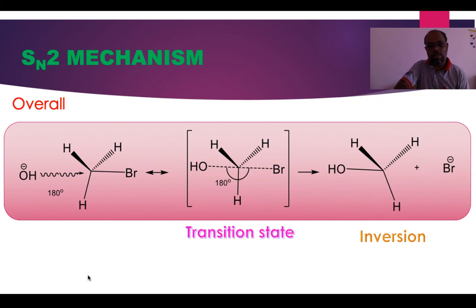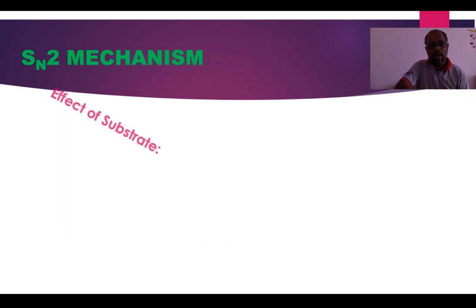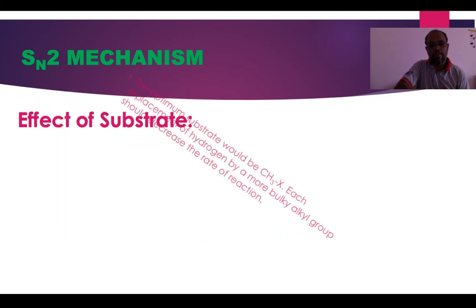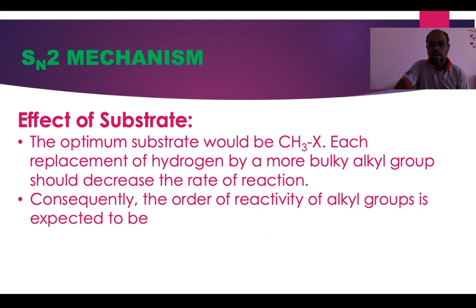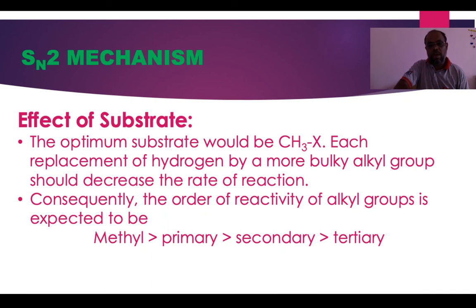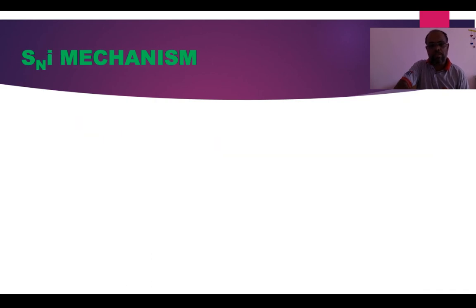In the pictorial representation of SN2, OH⁻ approaches 180 degrees opposite to Br, follows a transition state, and forms an inverted product. The backside attack is the key factor. If bulkiness increases, it hinders the backside attack, so the rate of reaction decreases. The order of reactivity is: methyl > primary > secondary > tertiary.